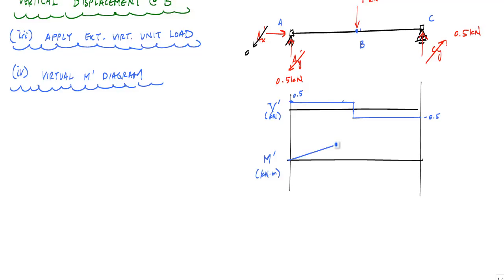and then decreasing at a rate of 0.5 kilonewtons meter per meter, so it's essentially a triangle. And this value here, this value would be the area of this portion of the shear diagram. And if you recall, this distance here was 6 meters, so 0.5 times 6 meters is 3 kilonewton meters. And that would make this value 3 kilonewton meters.